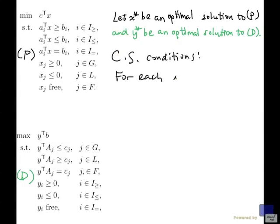For each i, one up to m. Remember m is the number of constraints up here in P. This says i from a partition of the z1 up to m. So for each i, basically we are saying for each constraint in P, if a i transpose x star is not equal to b i, then y i star must be 0.